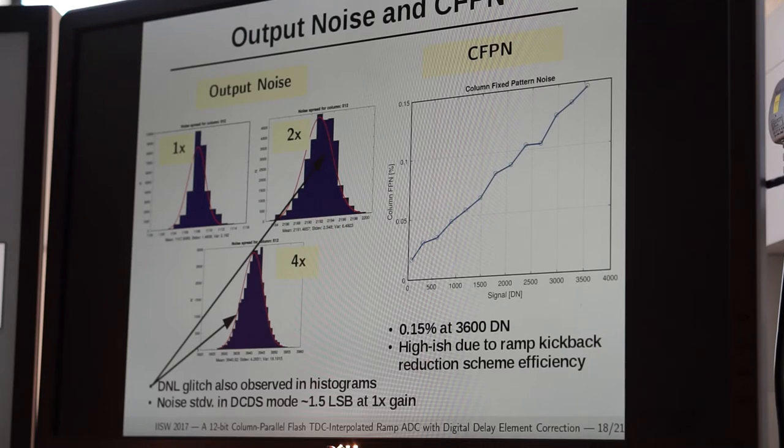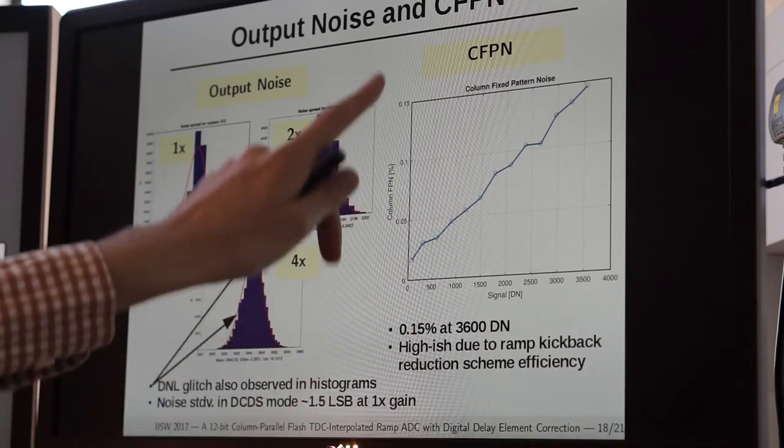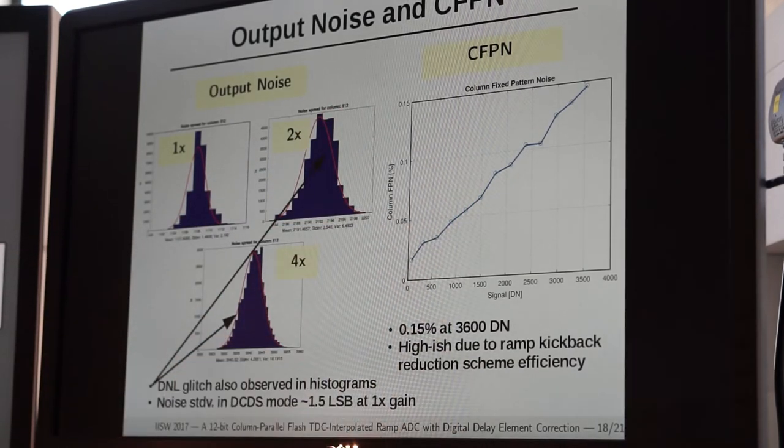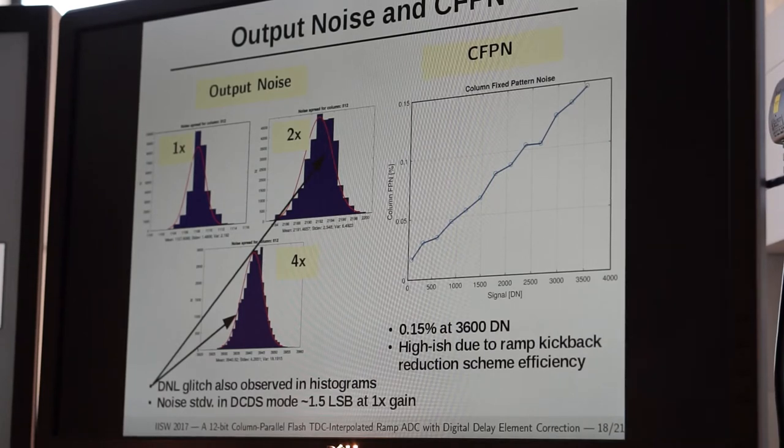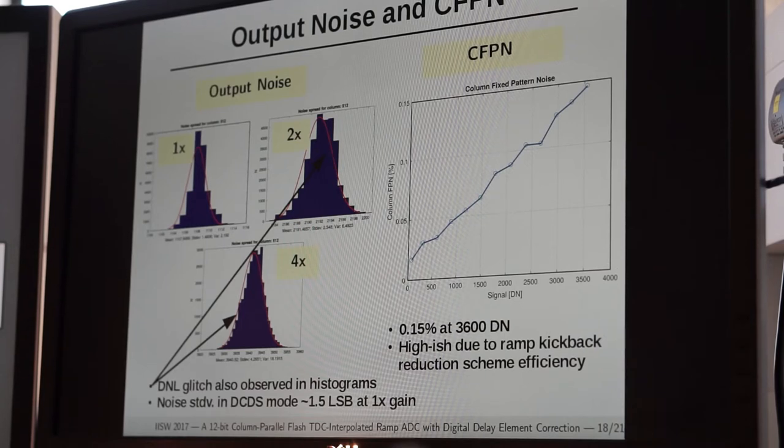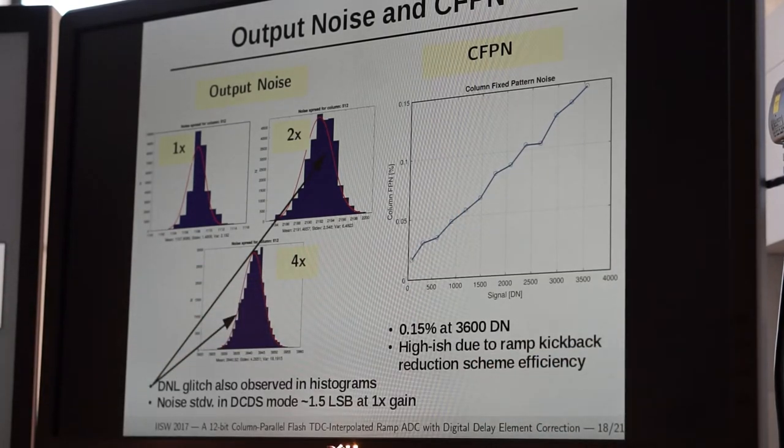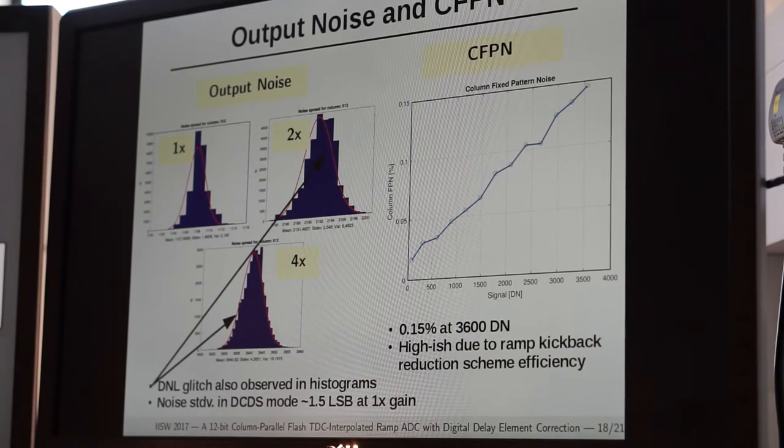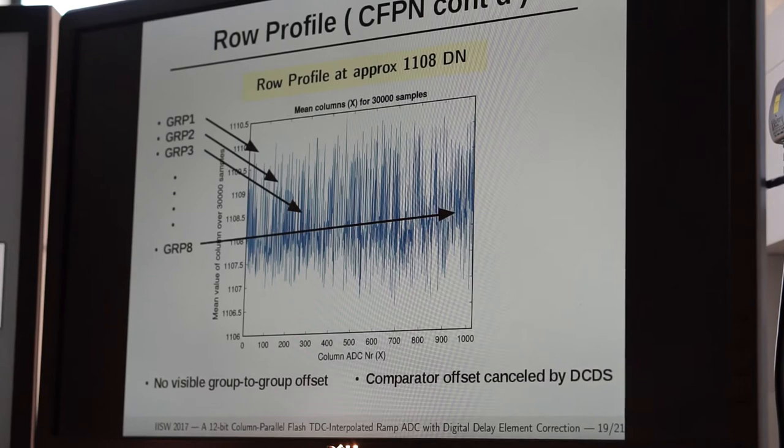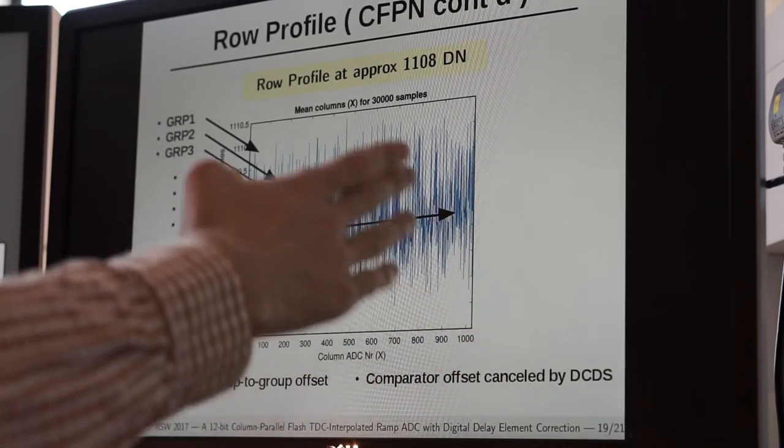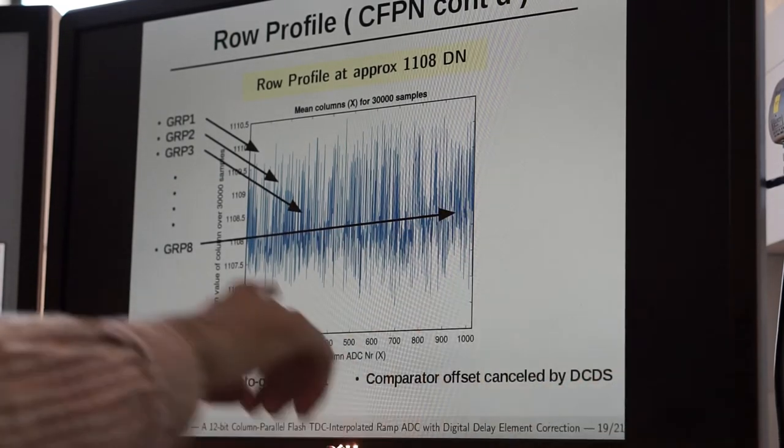This 1.5 LSB is at digital correlated double sampling mode. Some comments about the matching between the ADC groups - on the right side you can see the common fixed pattern noise for the whole array of 1024 ADCs versus the signal level. It is 0.15 percent at the highest major signal level of 3600 digital numbers. It's a little bit high-ish and slightly observable in the image, as we shall show later. This issue was caused by a slight inefficiency of our kickback noise reduction scheme and basically comes from the comparator.